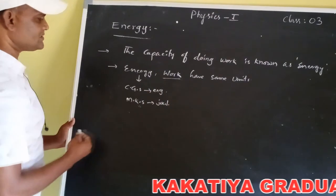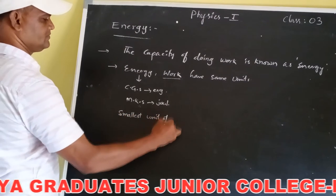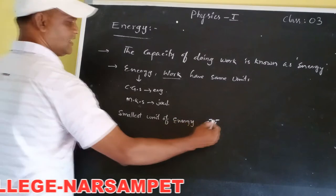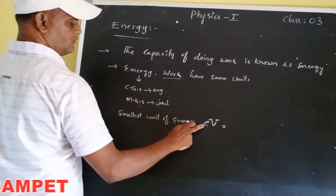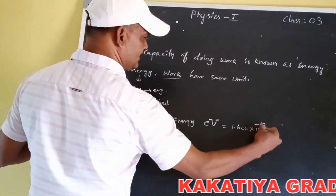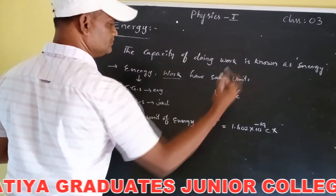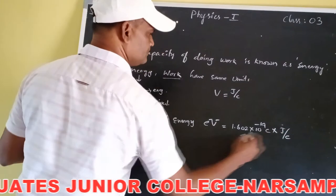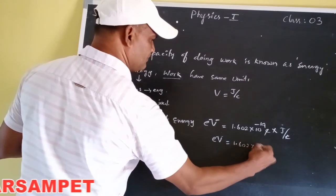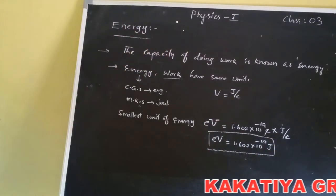The smallest unit of energy is electron volt. The electron volt is defined using the charge of an electron, which equals 1.602 × 10⁻¹⁹ coulombs. Volt is nothing but joule per coulomb. So 1 electron volt equals 1.602 × 10⁻¹⁹ joule. This is the smallest unit of energy.